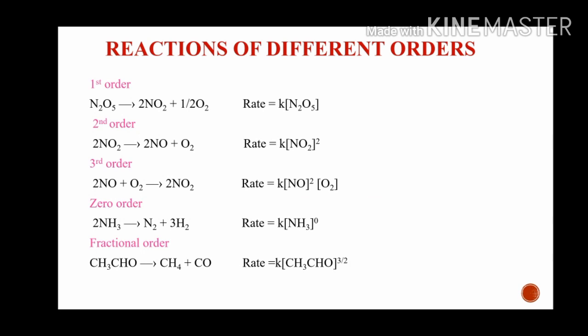Here are examples of reactions with different orders. First example: N2O5 giving 2NO2 plus half O2. The rate is equal to K into concentration of N2O5. Since the power of N2O5 is 1, this is called a first order reaction.